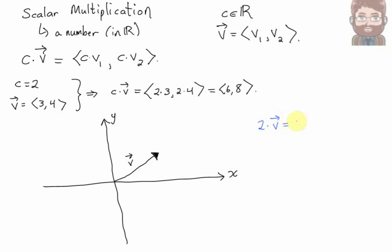The vector 2 times V is 6, 8. If I were to draw that vector, it points in the same direction as V, but it turns out it's twice as long. In other words, multiplying a vector by 2 has doubled its length.